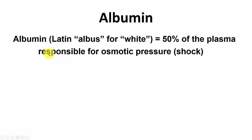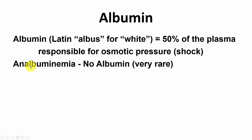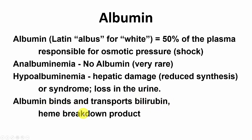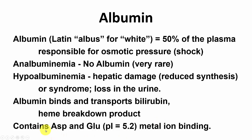Albumin comes from the Latin word 'albus' meaning white. It accounts for 50% of blood plasma protein and is responsible for osmotic pressure. Albumin is made by the liver. Analbuminemia means no albumin in the blood and is extremely rare; hypoalbuminemia results from hepatic damage such as liver cirrhosis (reduced synthesis) or kidney syndrome (albumin lost into urine). Albumin binds and transports bilirubin — the insoluble yellow breakdown product of heme — and also binds metal ions via its aspartic and glutamic acid residues.